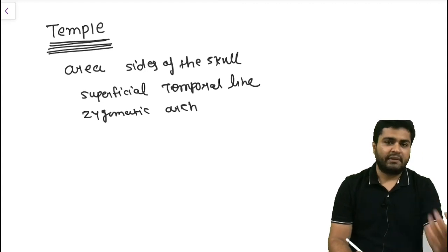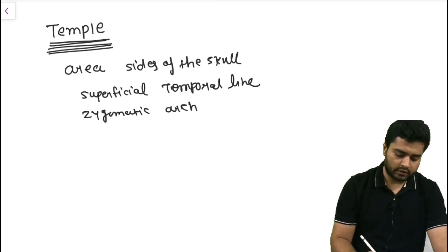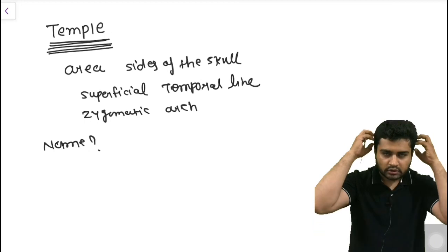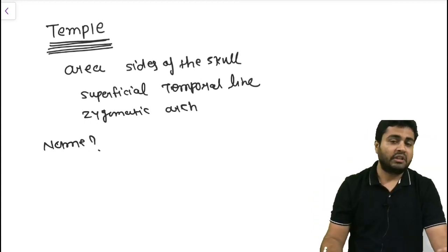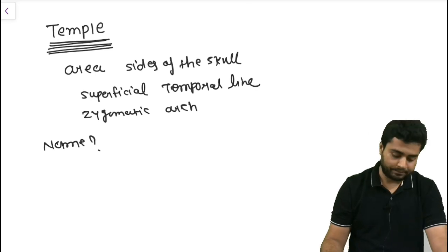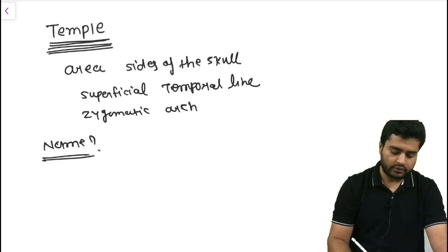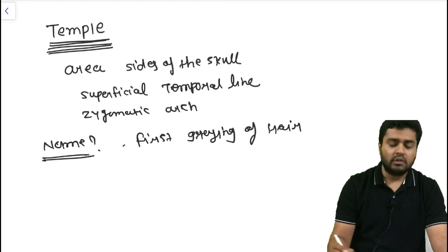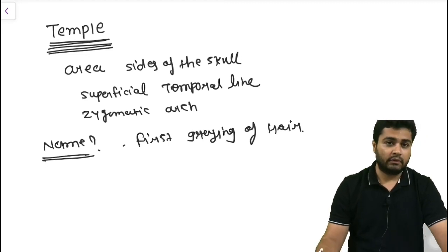What is known as the temple? The name is given because mostly the graying of the hair first occurs over this region. So with the passage of time, this word is derived from 'temple' because the first graying of hair occurs over this region.